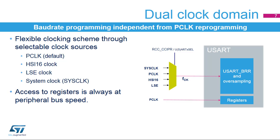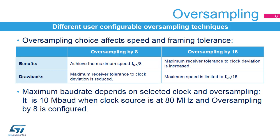The USART has a flexible clocking scheme. Its clock source can be selected in the RCC, and can be either the PCLK or peripheral clock, which is the default clock source, or the HSI-16, LSE, or system clock. The registers are accessed through the APB bus, and the kernel is clocked with FCK, which is independent from the APB clock.